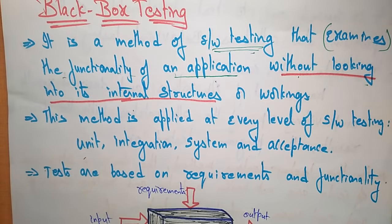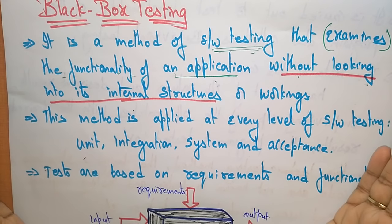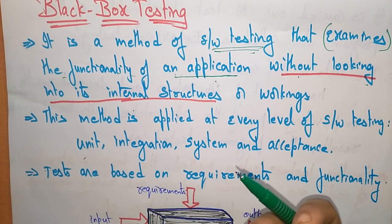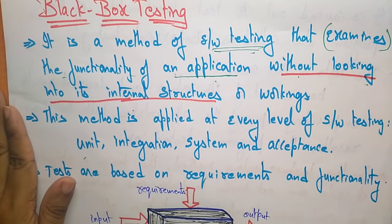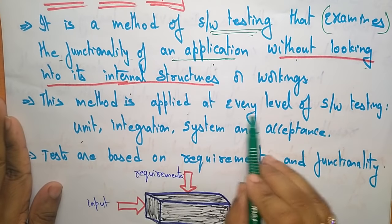Whenever you write about black box testing, remember that it only examines the functionality of an application — the outside view will be tested. It doesn't bother about internal structures, working conditions, or what programming language was used. This method is applied at every level of software testing: unit testing, integration testing, system testing, and acceptance testing.